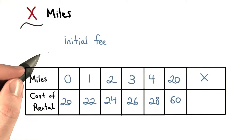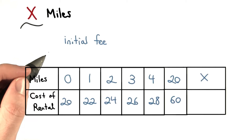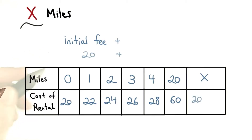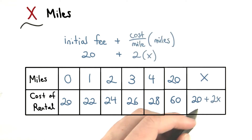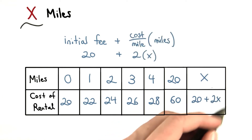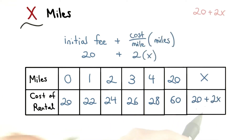The price of the truck will always include the $20 initial fee. So let's write that first. Then, whatever the number of miles we drive, we have to multiply it by 2, since the cost is $2 per mile. So we should add 2x to our expression.